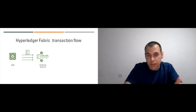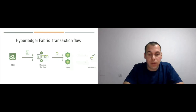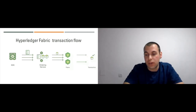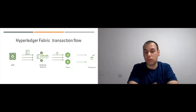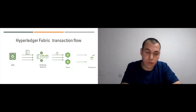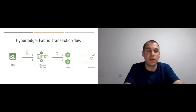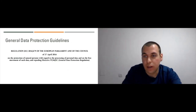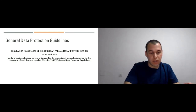The ordering service is a cluster of nodes — each called an ordering service node — and its role is to create the blockchain itself. By running a consensus algorithm, it creates blocks. These blocks are disseminated to peers, which validate the transactions, apply only the valid ones, and ignore invalid transactions. However, all transactions end up in the ledger.